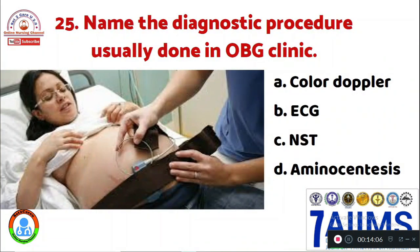Question 25: Name the diagnostic procedure usually done in an OBG clinic. Option A: color Doppler. Option B: ECG. Option C: NST. Option D: amniocentesis. The right answer is Option C, non-stress test (NST).